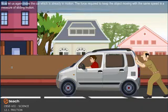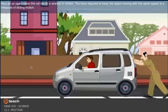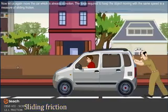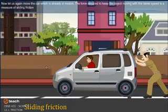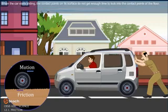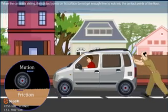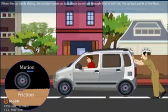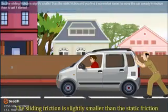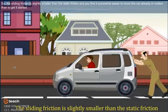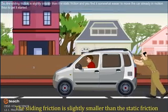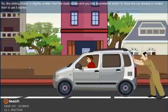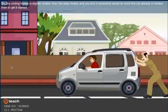Now, let us again move the car which is already in motion. The force required to keep the object moving with the same speed is a measure of sliding friction. When the car starts sliding, the contact points on its surface do not get enough time to lock into the contact points of the floor. So, the sliding friction is slightly smaller than the static friction and you find it somewhat easier to move the car already in motion than to get it started.